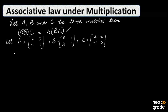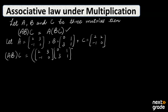So we have (AB) into C. What does it mean? First of all, we will solve the bracket — it means A multiplied by B first. When we multiply A by B, it means we will solve the bracket before the outer multiplication. Then the result will be multiplied by C.